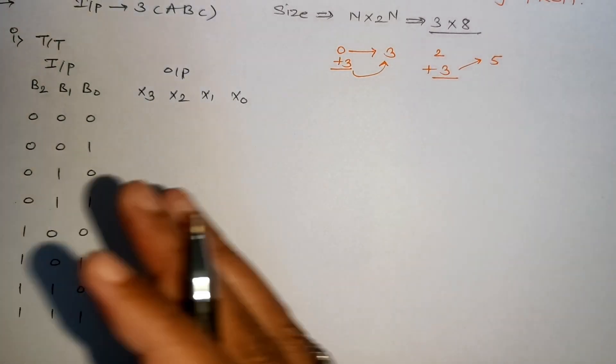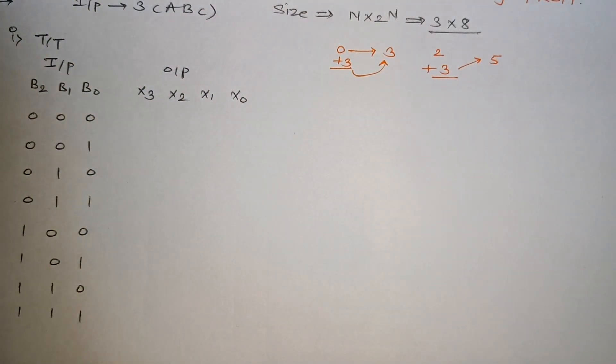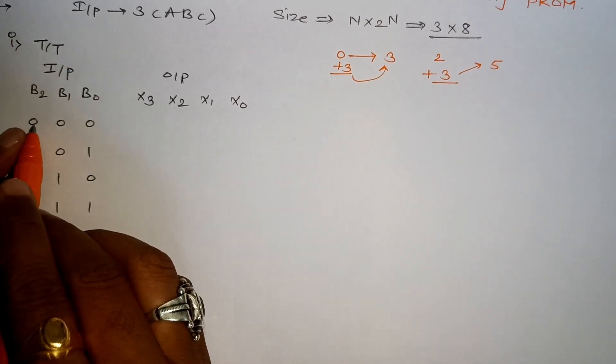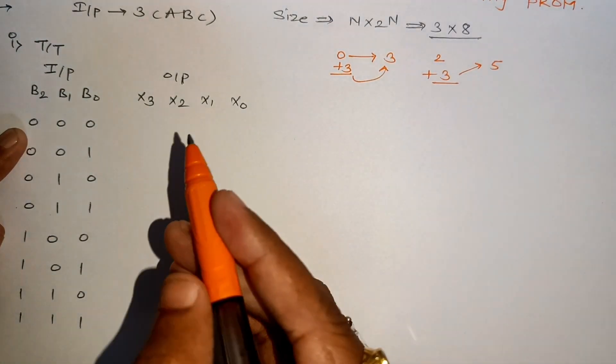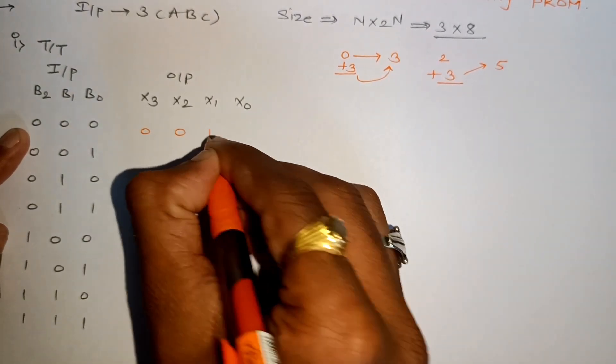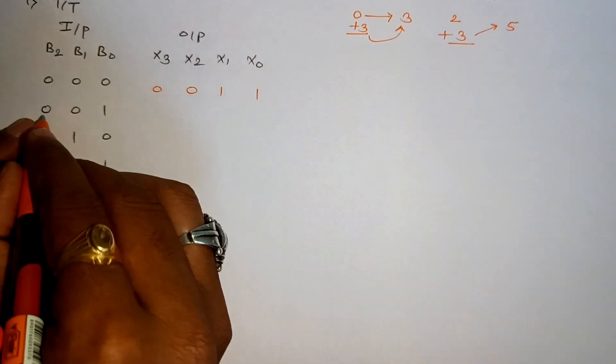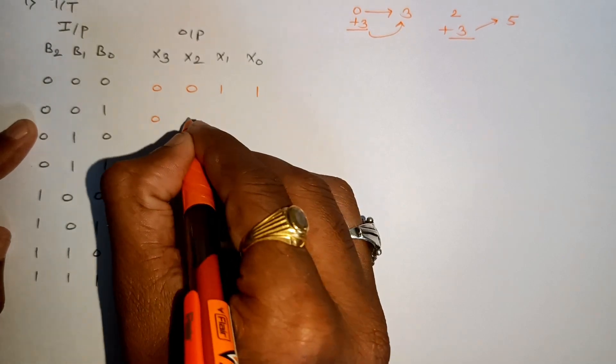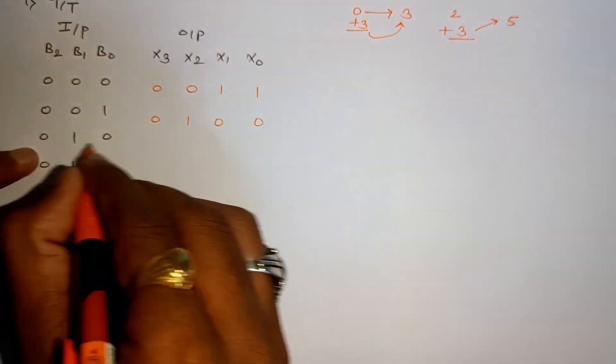Now we will convert this to XS3. So first if we add 3 to 0, 0, 0, it becomes 3. Its equivalent is 0, 0, 1, 1 in 4-bit. Similarly, 1 becomes 4, so we will write 0, 1, 0, 0. 2 becomes 5.